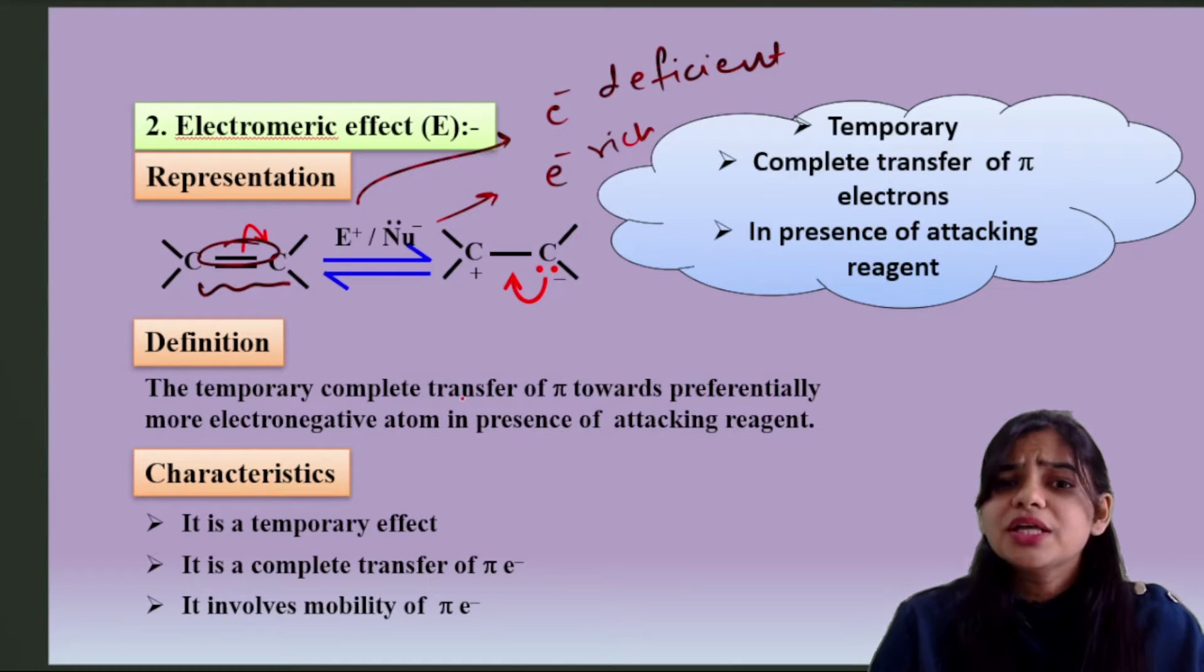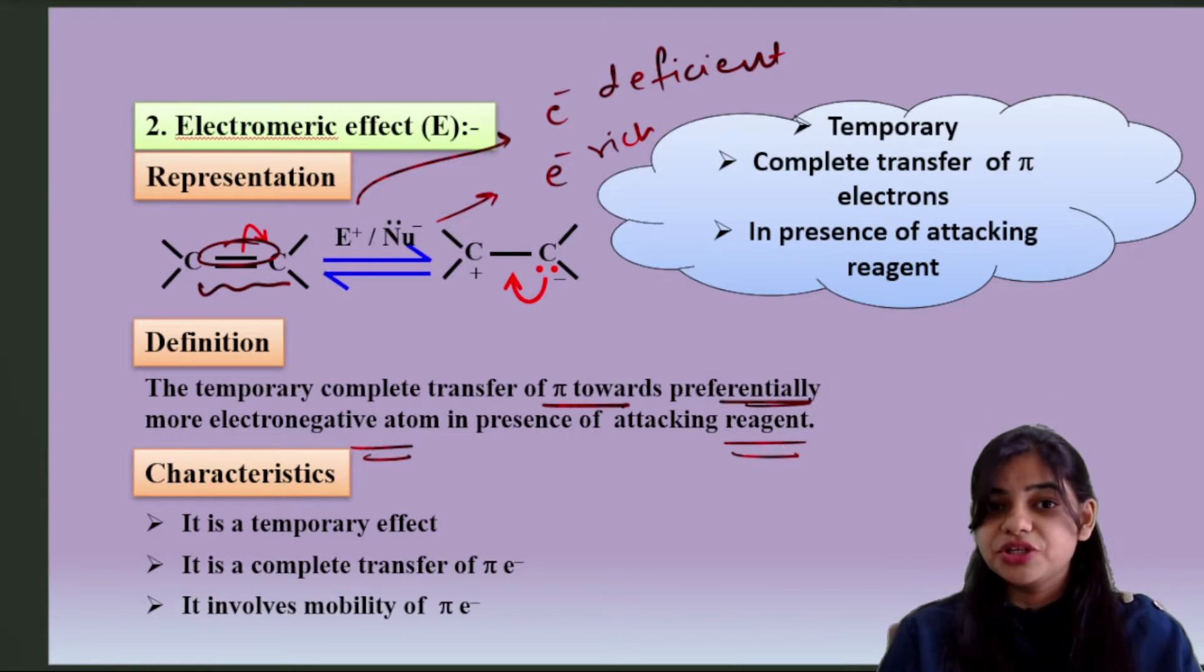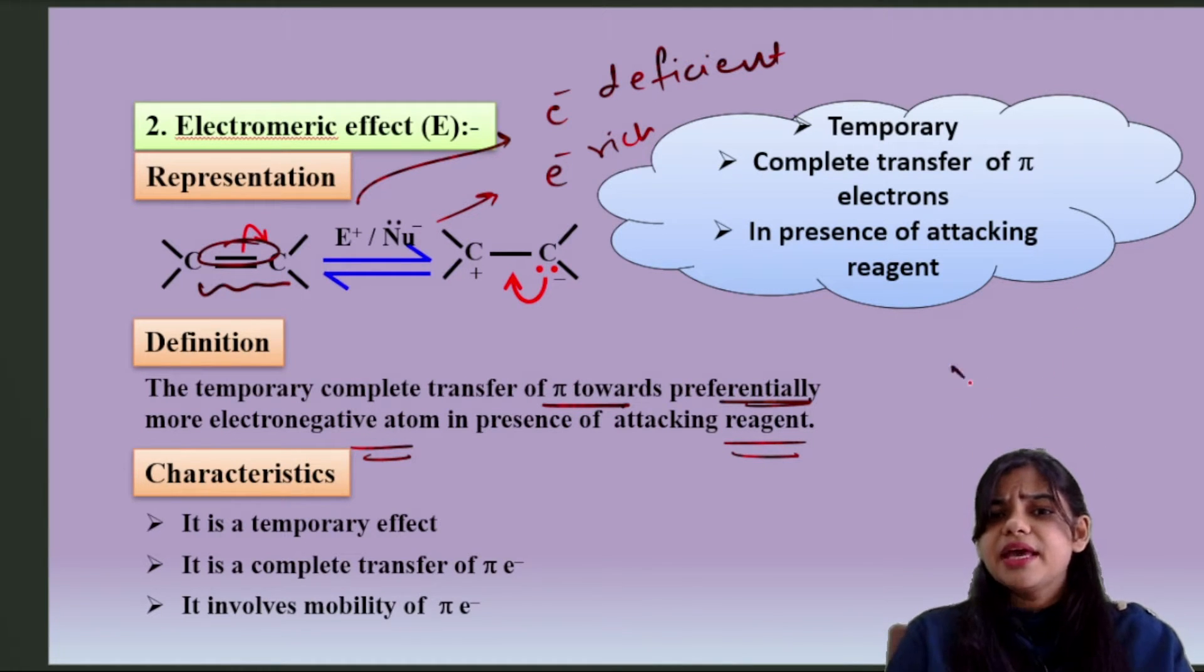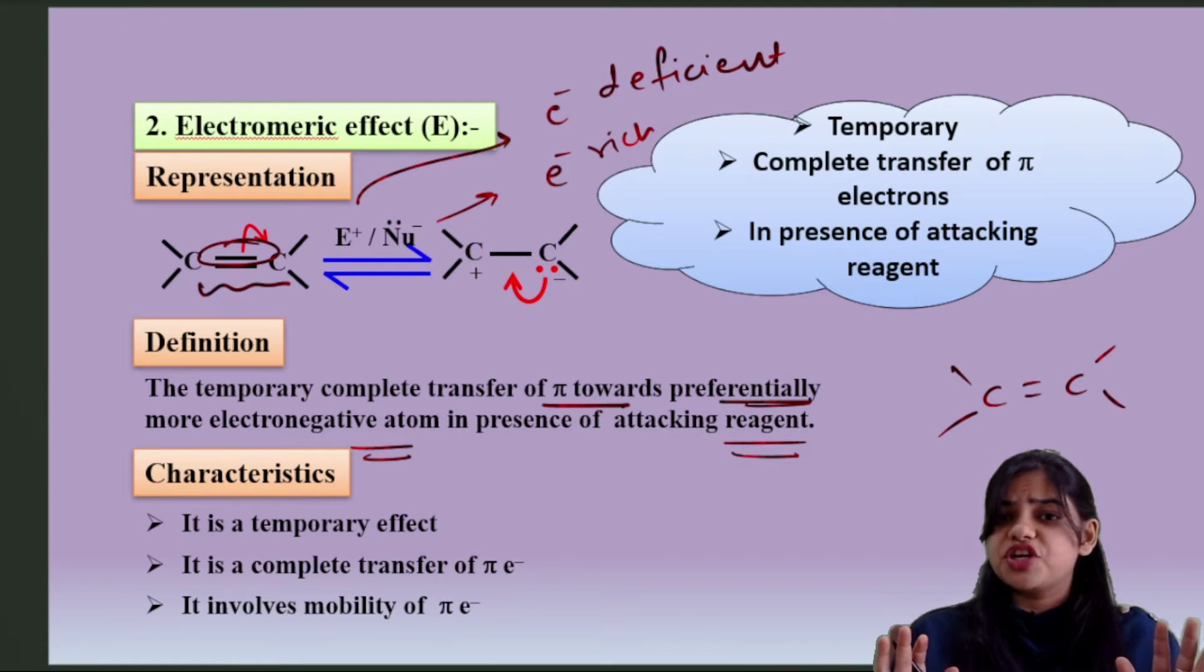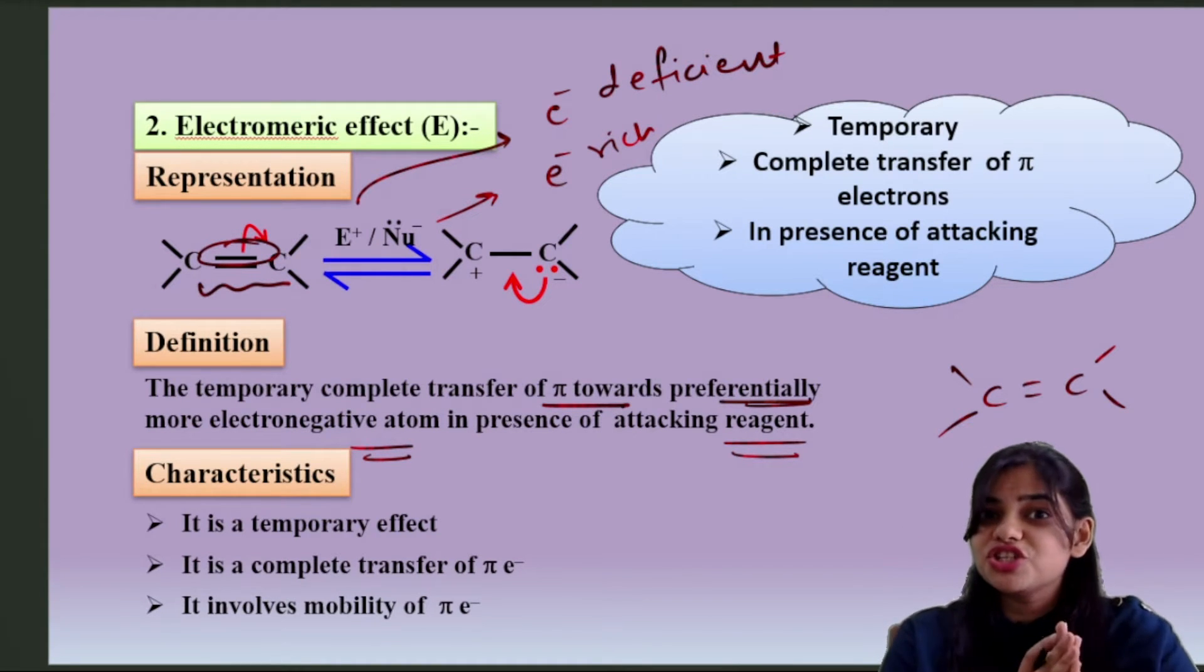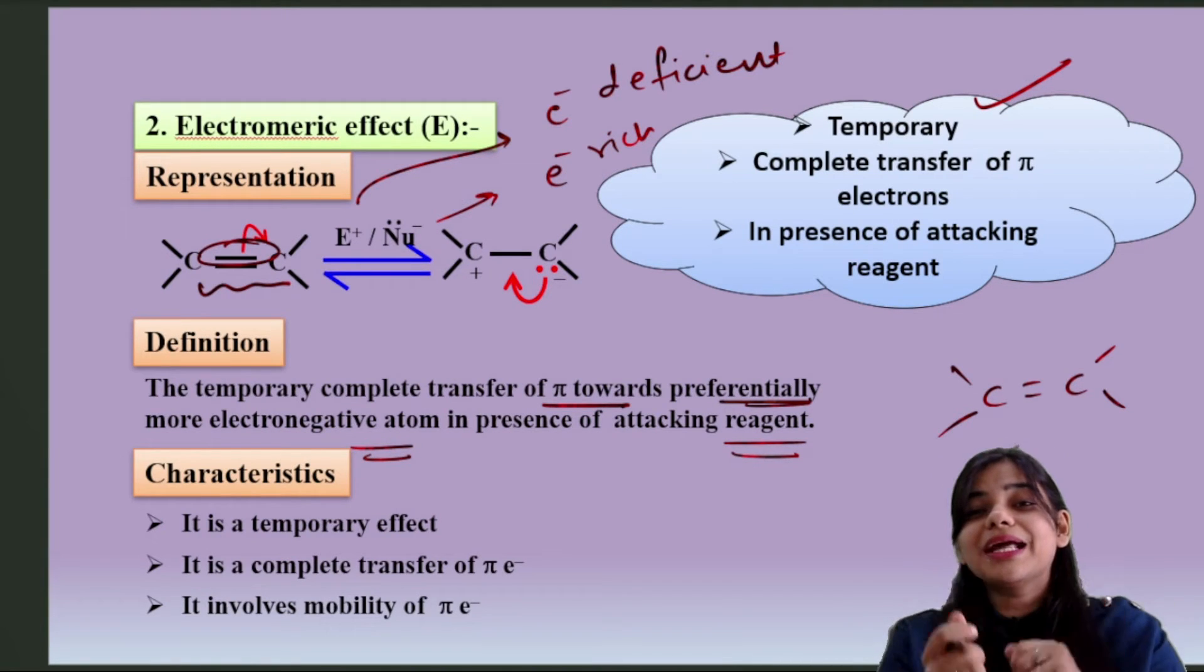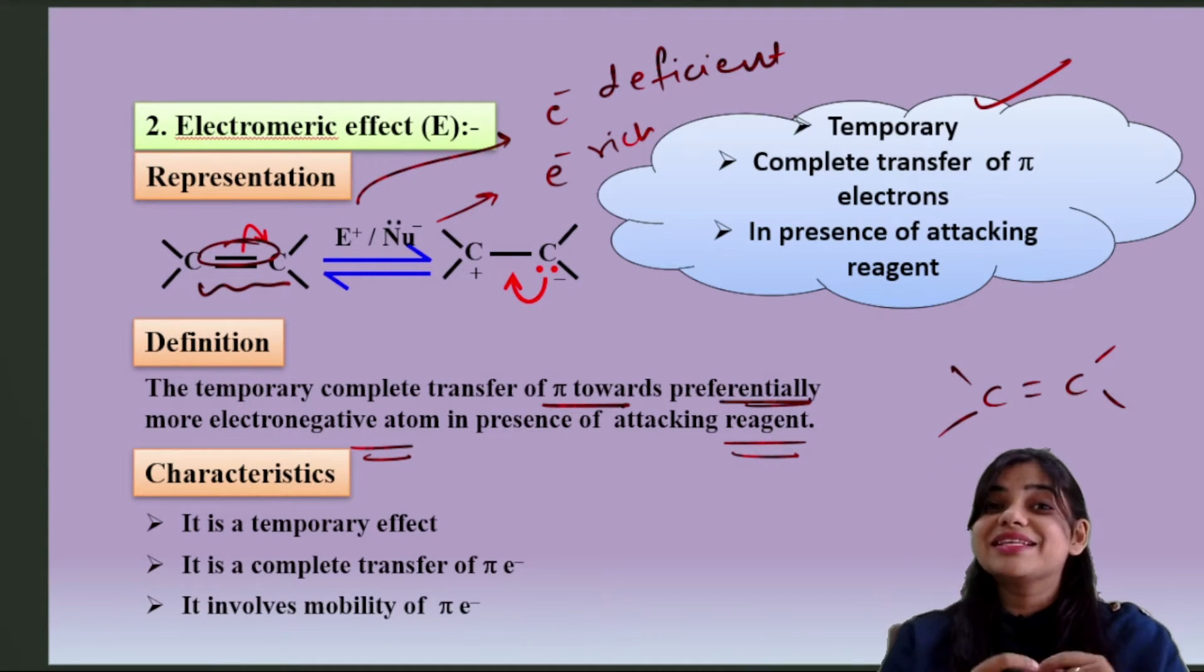This double bond breaks such that the pi bond's both electrons go to one carbon. So the temporary complete transfer of pi electrons towards preferentially more electronegative atom in the presence of attacking reagent. In alkyne, as such there will be no positive and negative charge, but the moment if someone attacks on alkyne, then only this positive and negative charge distribution takes place. So it is not permanent, it is a temporary effect.